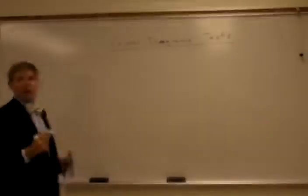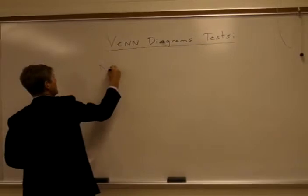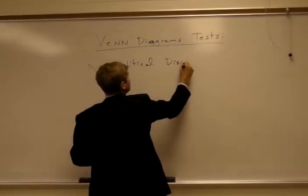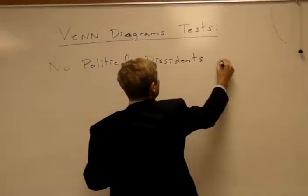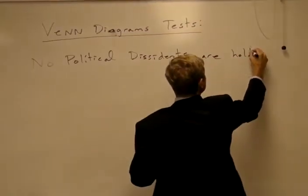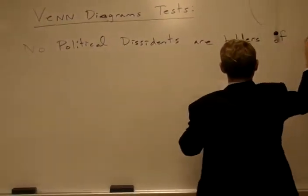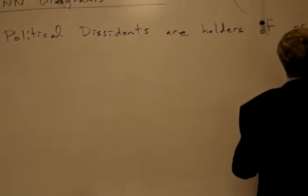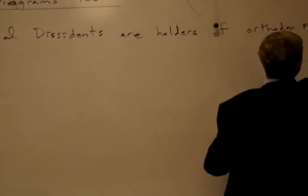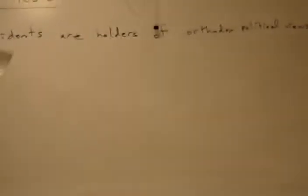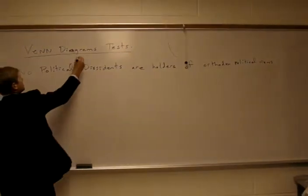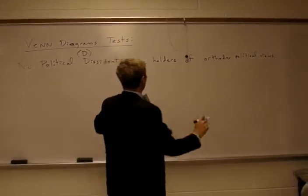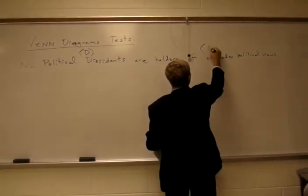I'm going to begin with an E-statement: 'No political dissidents are holders of orthodox political views.' We can simplify this — we can call political dissidents 'D' and holders of orthodox political views 'O', because recall that when we evaluate for deduction and validity, we are evaluating for structure, not for content.